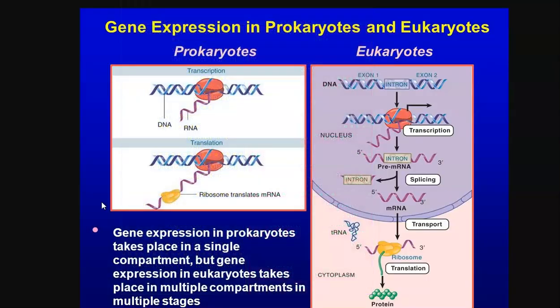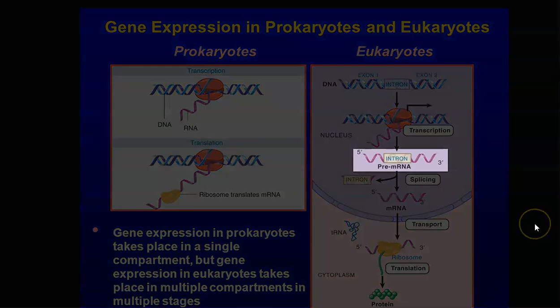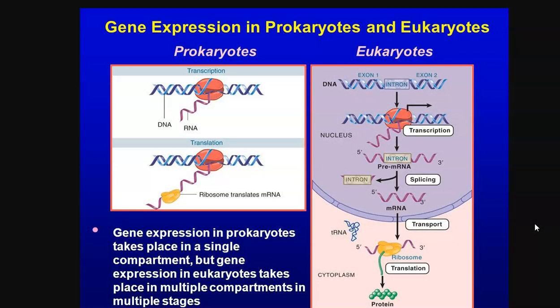Look at this diagram. The left side shows a prokaryote: from the DNA, an mRNA molecule is transcribed and that mRNA molecule will be immediately translated in the prokaryotic organism. When we look at the eukaryotic organism, the DNA, when it is transcribed, will be converted only as a pre-mRNA. Formation of pre-mRNA is an important and unique feature of the eukaryotic organism.